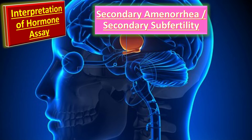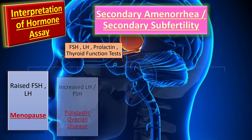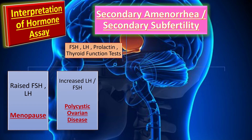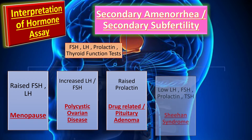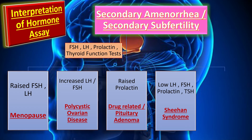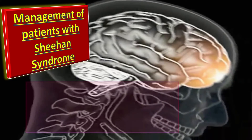When the results of hormone assays are interpreted carefully, these can diagnose or rule out most of the causes of secondary amenorrhea. Raised FSH and LH levels suggest menopause. Increased LH to FSH ratio is suggestive of polycystic ovarian disease, although we use the Rotterdam criteria for its diagnosis. A raised prolactin level is either drug-related or points to a pituitary adenoma. Low FSH, LH, prolactin, and thyroid function tests indicate Sheehan syndrome. Abnormal thyroid function tests are seen in thyroid dysfunction.